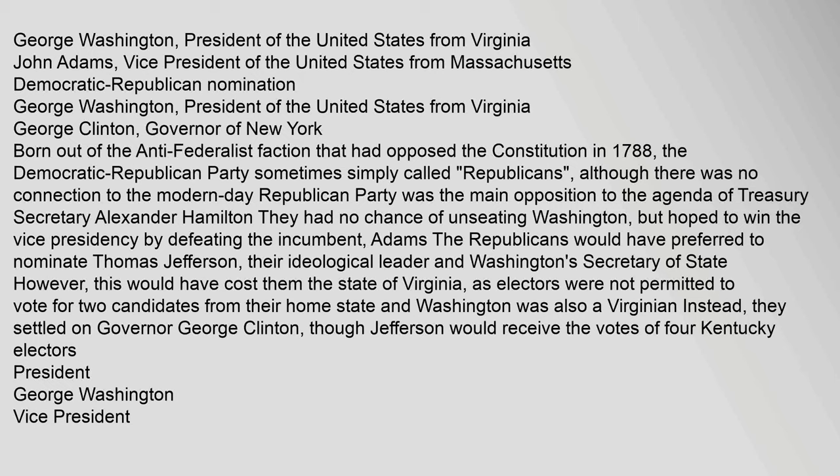They had no chance of unseating Washington, but hoped to win the vice presidency by defeating the incumbent Adams. The Republicans would have preferred to nominate Thomas Jefferson, their ideological leader and Washington's Secretary of State; however, this would have cost them the state of Virginia, as electors were not permitted to vote for two candidates from their home state, and Washington was also a Virginian. Instead, they settled on Governor George Clinton, though Jefferson would receive the votes of four Kentucky electors.